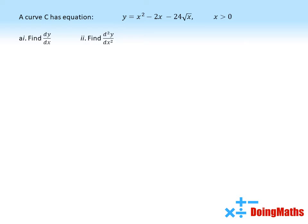A curve C has equation y equals x squared minus 2x minus 24 root x for x larger than 0. We need to find dy by dx and d²y by dx².